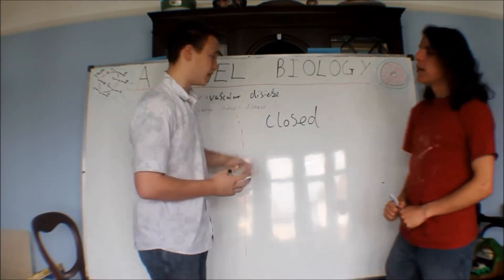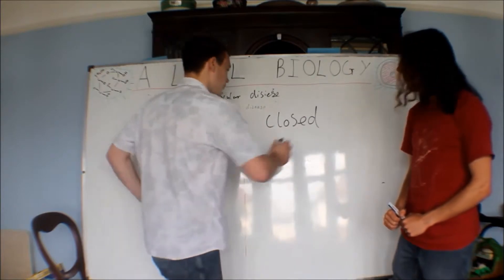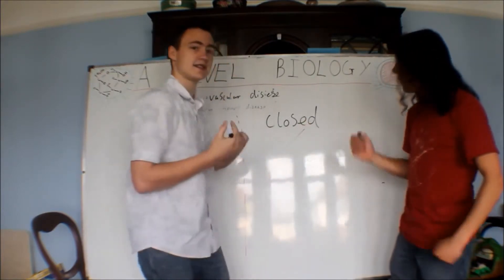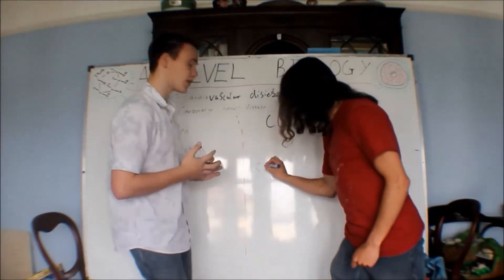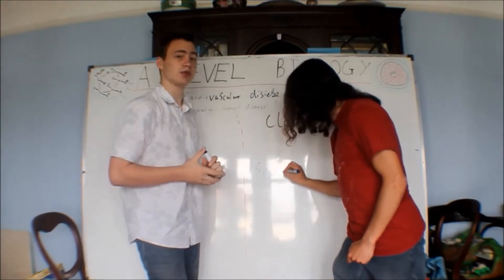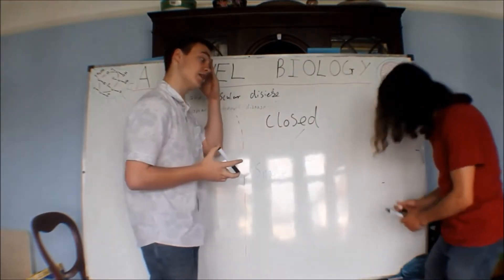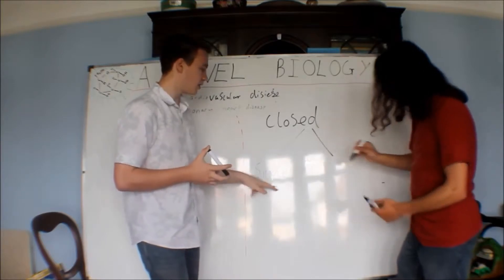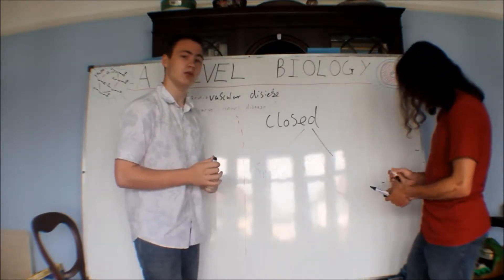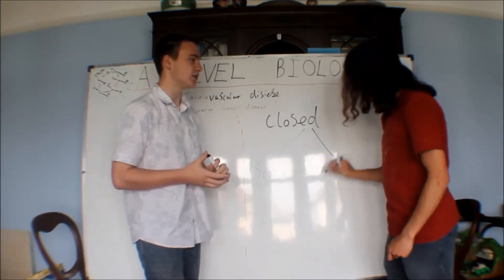We could split this side up even more. First you have a single circulatory system, and then you can have a double circulatory system. We'll start with the ones you should know. What is a single circulatory system?